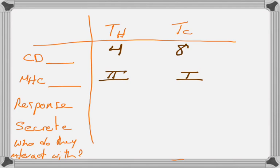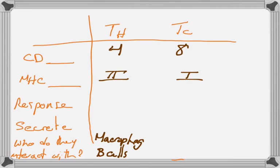Who do T helper cells interact with? There are only a subset of cells that express MHC2 — macrophages are the major one. B cells also express MHC2, and that's something we'll come back to on Friday. On the other hand, every single nucleated cell — everything except red blood cells — should express MHC1.